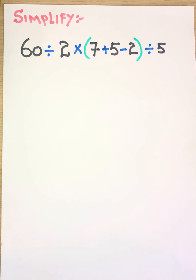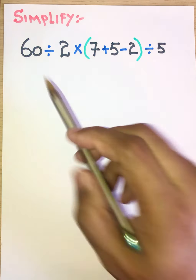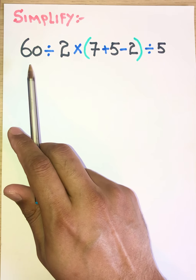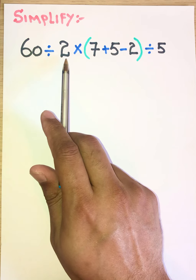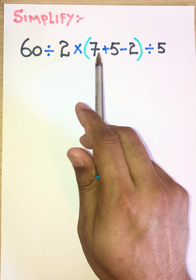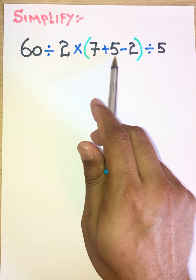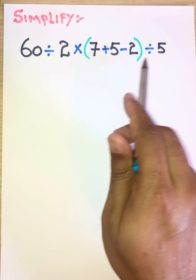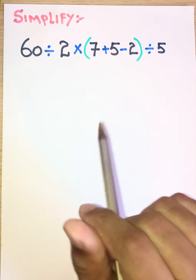Bismillahirrahmanirrahim. Assalamu alaikum everyone. Today we will simplify an expression which is a viral video - how to solve that kind of pattern. So we got a question: 60 divided by 2 times bracket open 7 add 5 minus 2 bracket close divide by 5.